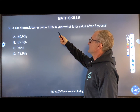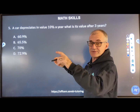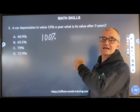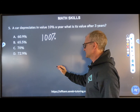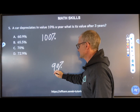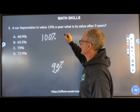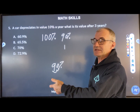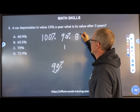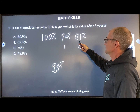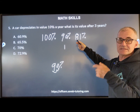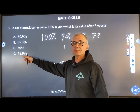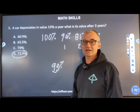Number five: a card depreciates in value 10% a year. What's the value after three years? Let's say it starts at 100%. A year later it's 90%, so 100 times 0.9 is 90. After the second year: 90 times 0.9 — nine times nine is 81, so 81%. Then 81 times 0.9 — eight times nine is 72, so it's going to be 72 and a little bit. Looking at the answers, there's only one answer above 72, so it has to be answer D: 72.9%.